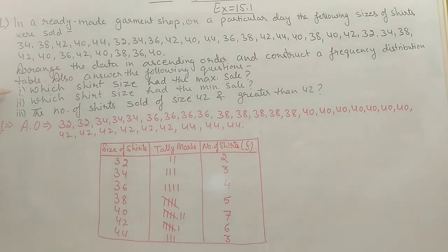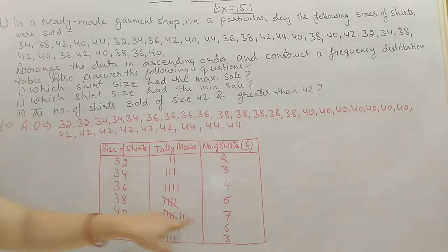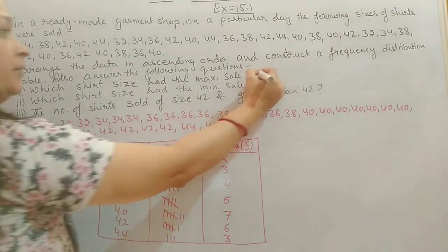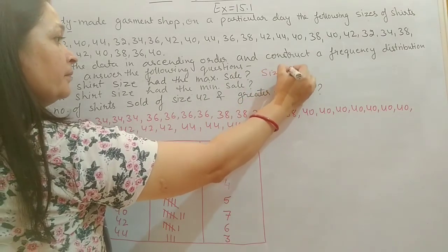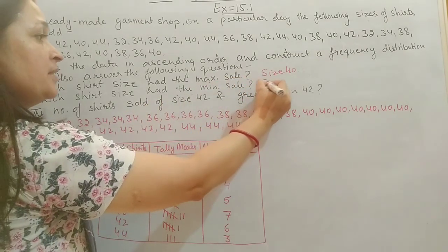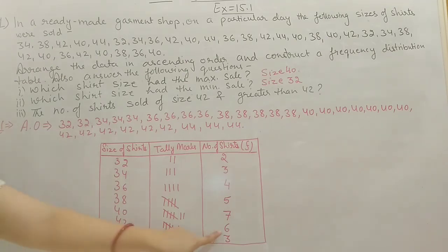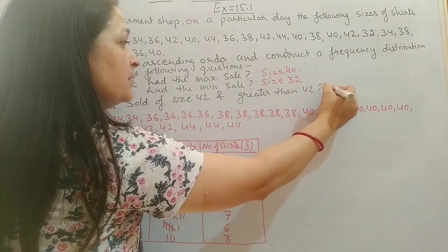After this, we answer the questions. First: which shirt size has maximum sale? From the frequency table, size 40 has frequency 7, which is maximum. So the answer is size 40. Second: which shirt size has minimum sale? Minimum frequency is 2, which is size 32. Third: number of shirts sold of size 42 and greater than 42. Size 42 is 6, and size 44 is 3, so 6 plus 3 equals 9.